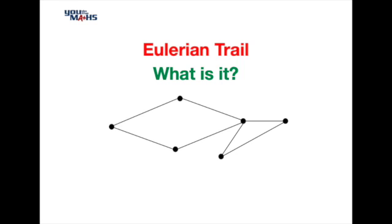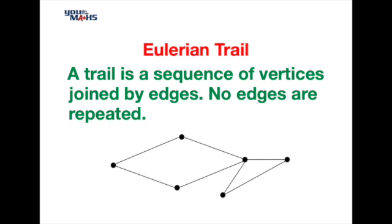In this video we're going to have a look at what defines a Eulerian Trail. Let's first of all though have a look at what actually is a trail. Now a trail is a sequence of vertices joined by edges but no edges are allowed to be repeated. So we can see in this clip here we've got a sequence of vertices from A to Z, no repeating edges, so this constitutes a trail.